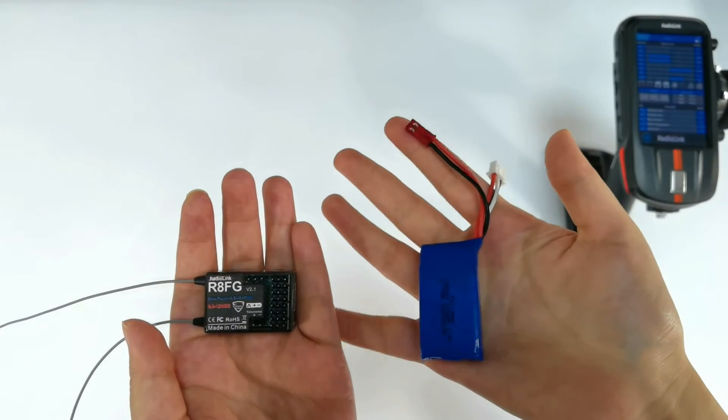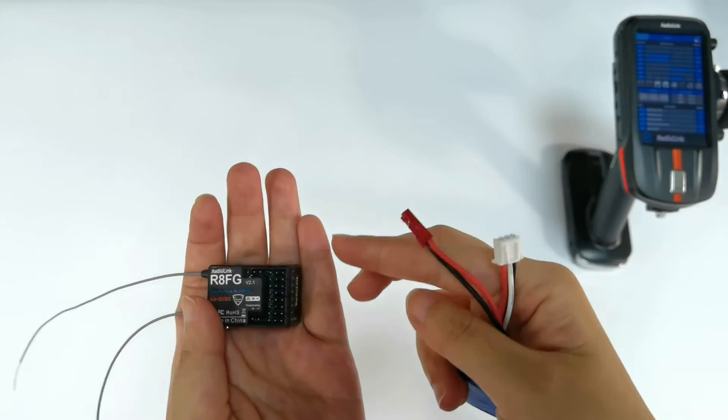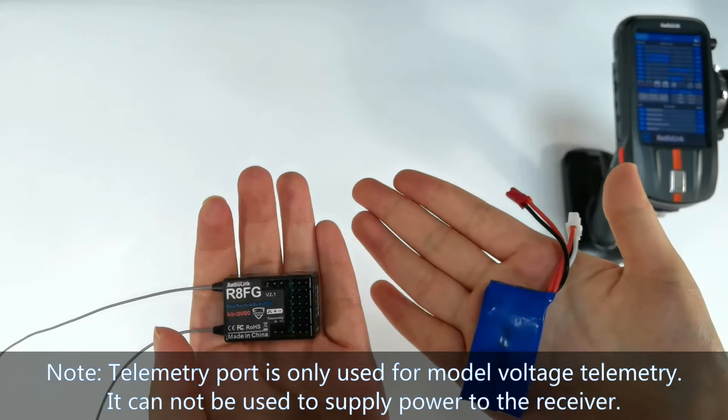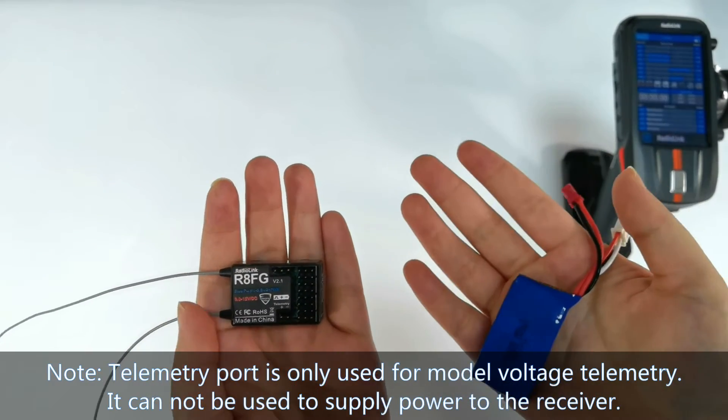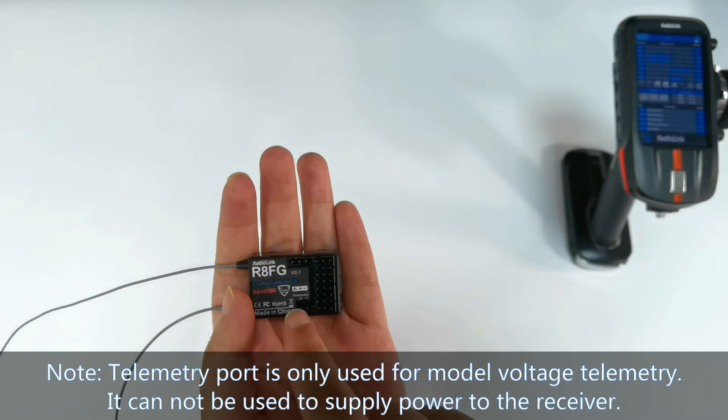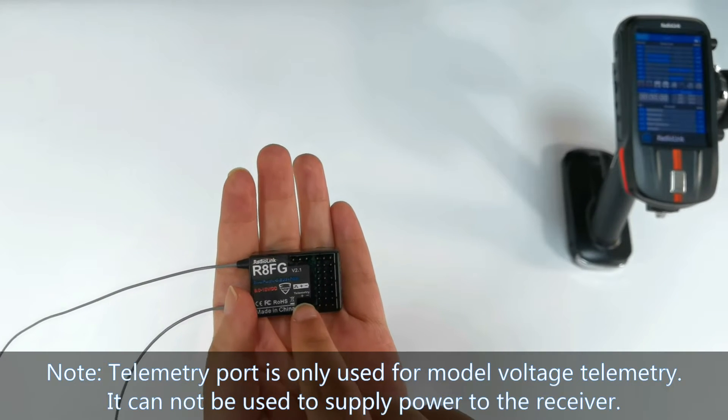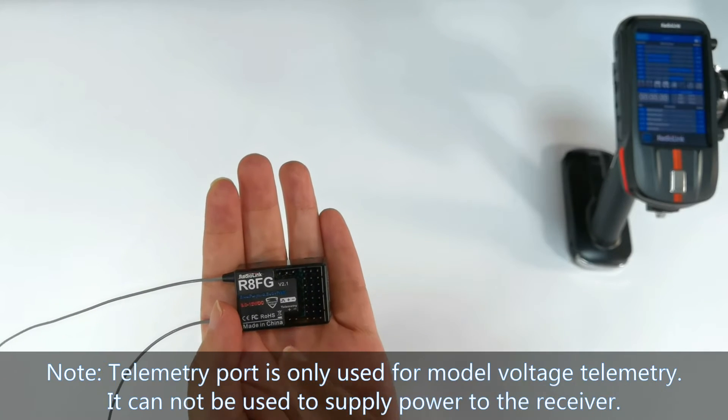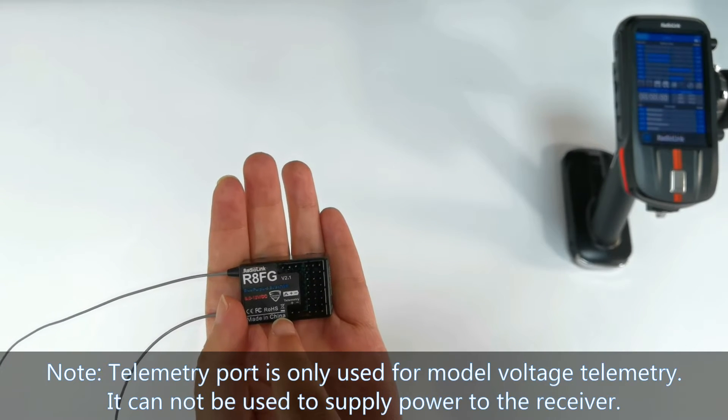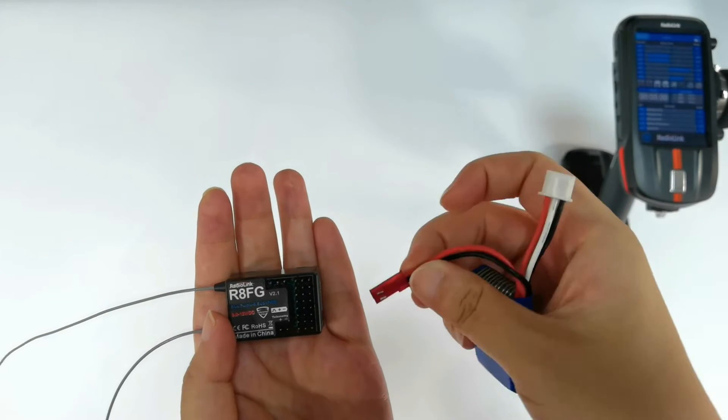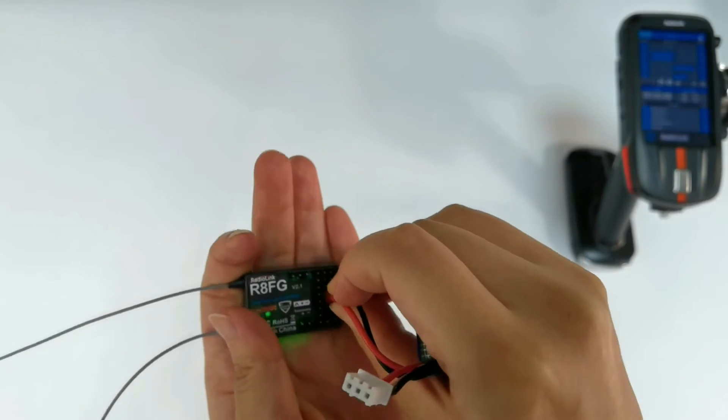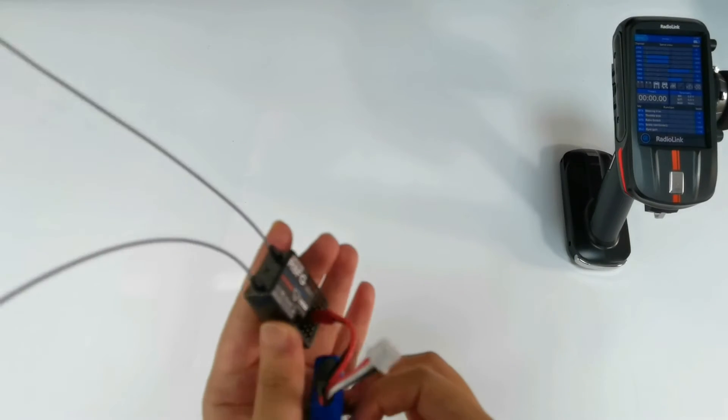You can plug the power supply battery into any one channel of the eight channels. But pay attention, the power supply battery cannot plug into the telemetry port, because the telemetry port is only for battery telemetry. It cannot be used to supply power. So I plug the battery into channel 4 and it is powered on.